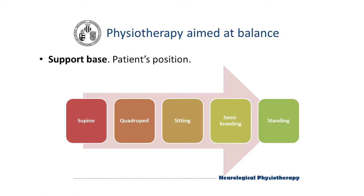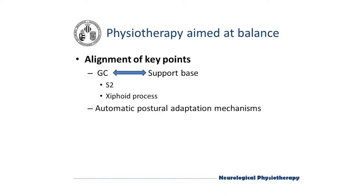In relation to the support base on which the exercises will be performed, we have to take into account that muscle tone is inversely proportional to it and to the support it gives. Thus, the greater the support base, the lower the postural tone. A correct posture requires alignment of the body's center of gravity in relation to the support base. This is a process carried out automatically through muscle contractions and adjustments to keep the center of gravity within the support base. When a body segment changes its position, the body's gravity center changes and this produces changes in postural tone.